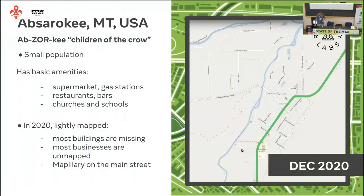This project took place in the US, in a town near where I grew up called Absorki, Montana. It has a very small population, just a few bars, grocery stores, and one supermarket, plus basic amenities like churches and schools. When I first looked at it in 2020, it was very lightly mapped — almost no buildings, very few POIs, and some Mapillary imagery only on the main street.